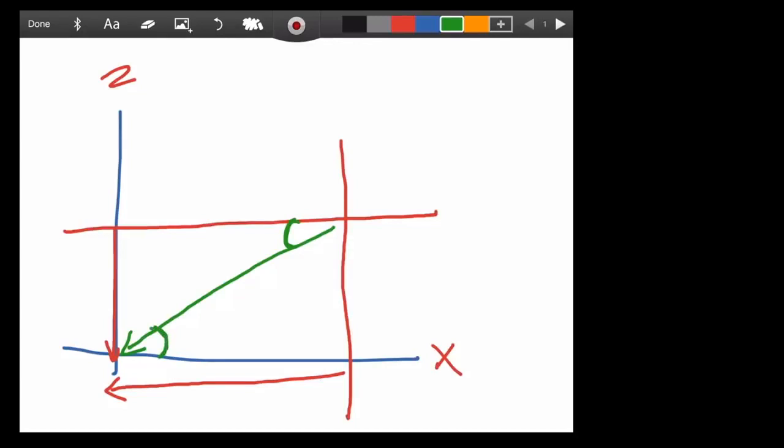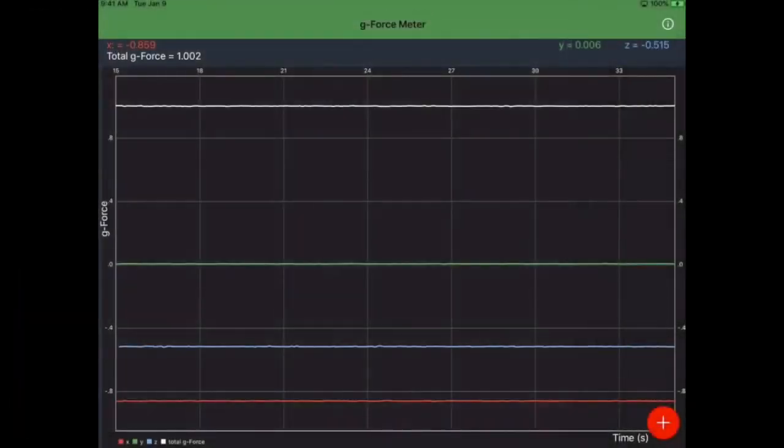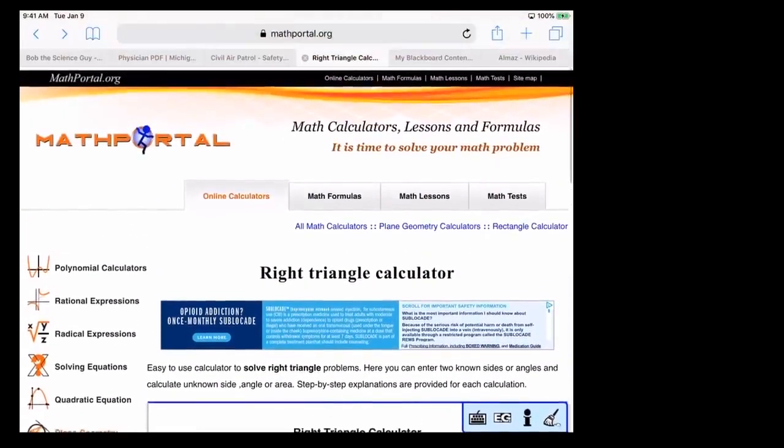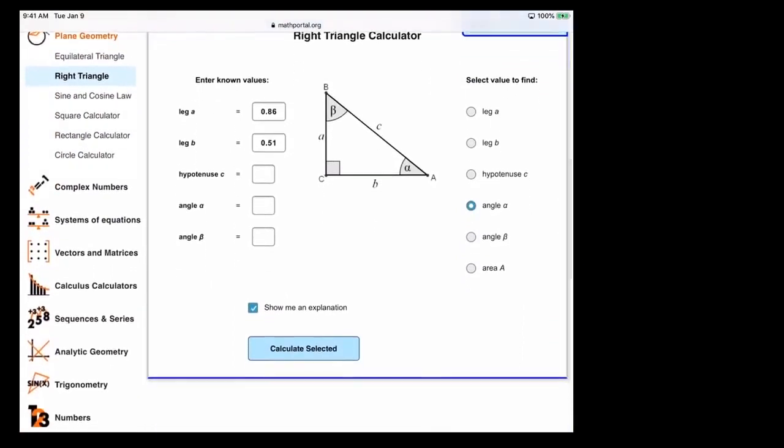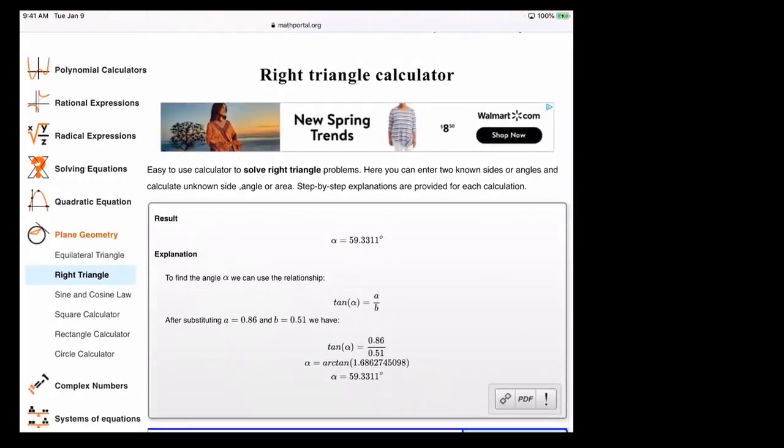Now, let's go ahead and read off our numbers again. Now, if we look at our numbers here, we see in the x-axis, we have a negative 0.86, and in the z-axis, we have a negative 0.52. So, we'll go ahead and take our numbers, and we'll put it in the right triangle calculator for Math Portal. So, we have leg A, which is in the x-axis, will be 0.86, and leg B, which is in the z-axis, 0.51, and we're going to solve for angle A. Let's see what it comes up to. 59.33 degrees.